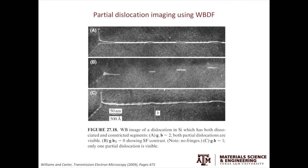Here is one more example from the textbook to show the superior spatial resolution of the weak beam technique. In this example, part of the silicon dislocations have dissociated and part of them still have a compact core. By doing very careful G·B and G·R analysis, you are able to reveal the dislocation partials and the stacking faults separately. In figure A, you see both partial dislocations but the stacking faults are invisible. In figure B, the dislocations are invisible but you see the stacking faults. In figure C, you only see one partial dislocation. These kinds of microstructural details are nearly impossible to reveal using a conventional two-beam condition.